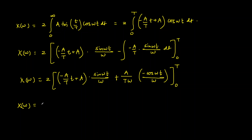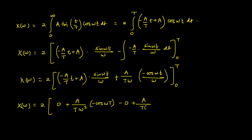Now we substitute the limits. At the upper limit T, (−A/T)·T + A = −A + A = 0, so the first part vanishes. This leaves (A/(Tω²))·[−cos(ωt)] evaluated from 0 to T. Substituting t = 0: sin(0) = 0 and cos(0) = 1, giving a contribution of +A/(Tω²). So x(ω) = 2·(A/(Tω²))·(1 − cos(ωT)).